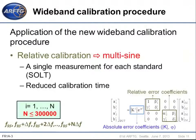The application of this new wideband calibration on the measurement system involves two steps. The first step is a relative calibration — a SOL calibration using the multi-sine signal. With this calibration procedure, as all the frequencies are generated and measured simultaneously, a single measurement is made for each standard to extract the error coefficients for all the frequency components. This will greatly reduce the calibration time compared to frequency sweeping measurement systems.